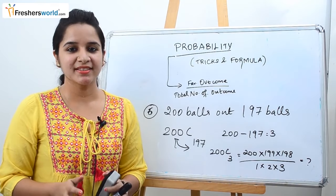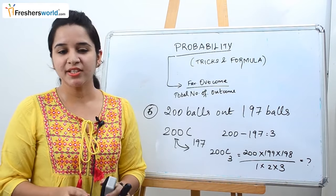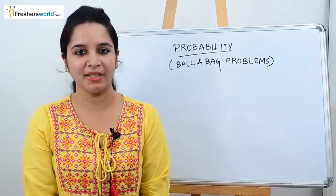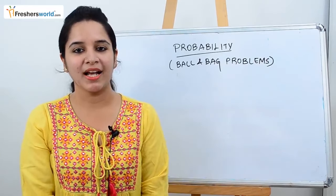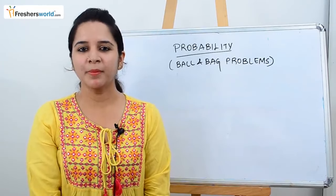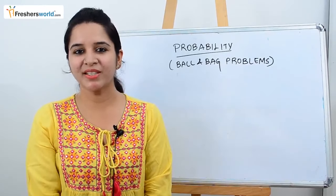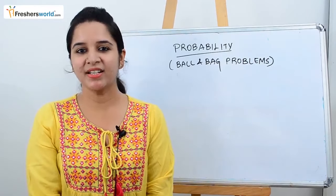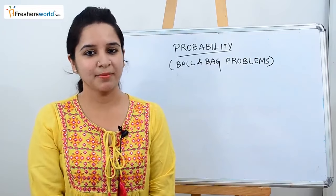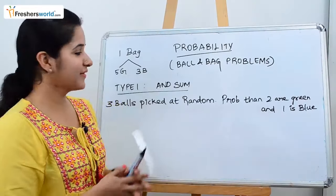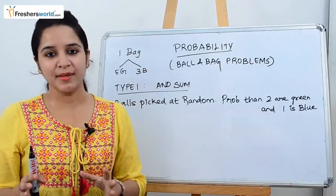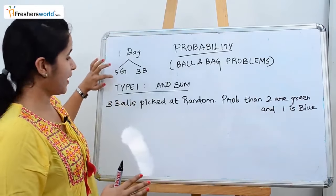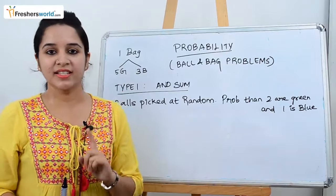If you understand all six tricks, it will be very easy to crack any probability problem. The topic now is probability with ball-and-bag problems. When you find a probability sum in any aptitude exam, it is mostly a ball-and-bag problem. There are seven basic types you can expect, and we'll use the same bag — five green balls and three blue balls — for all seven types.